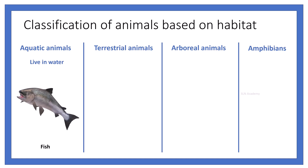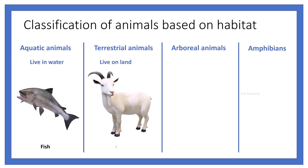Animals that live on land are called terrestrial animals. Examples: lions, tigers, elephants, and goats.